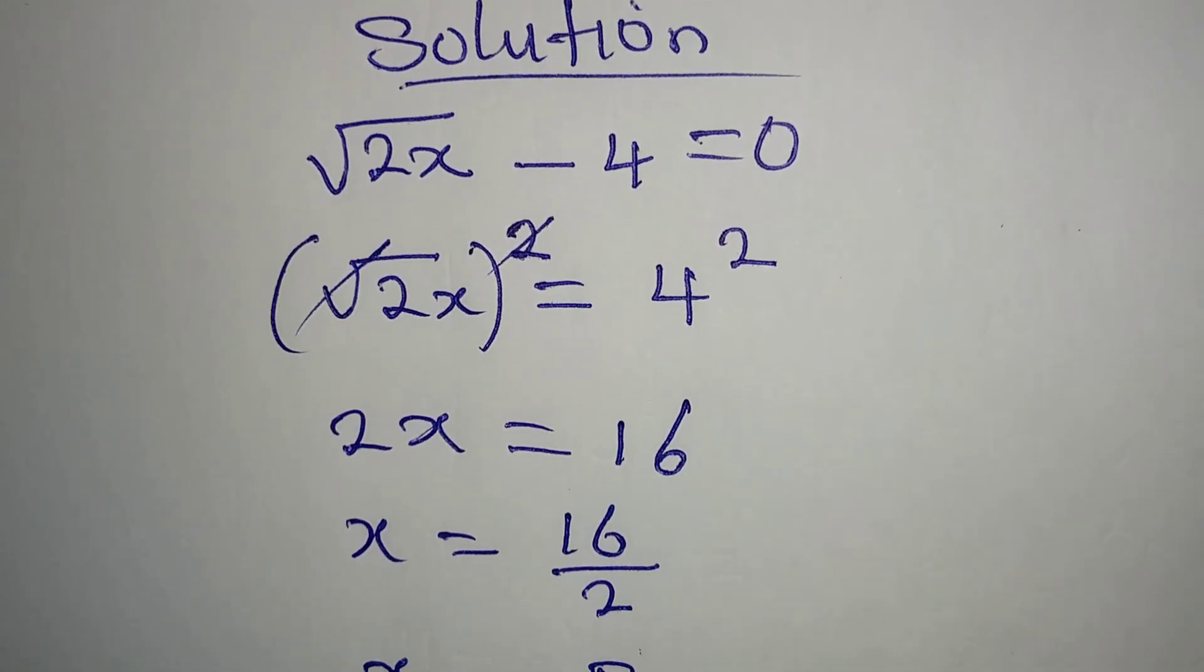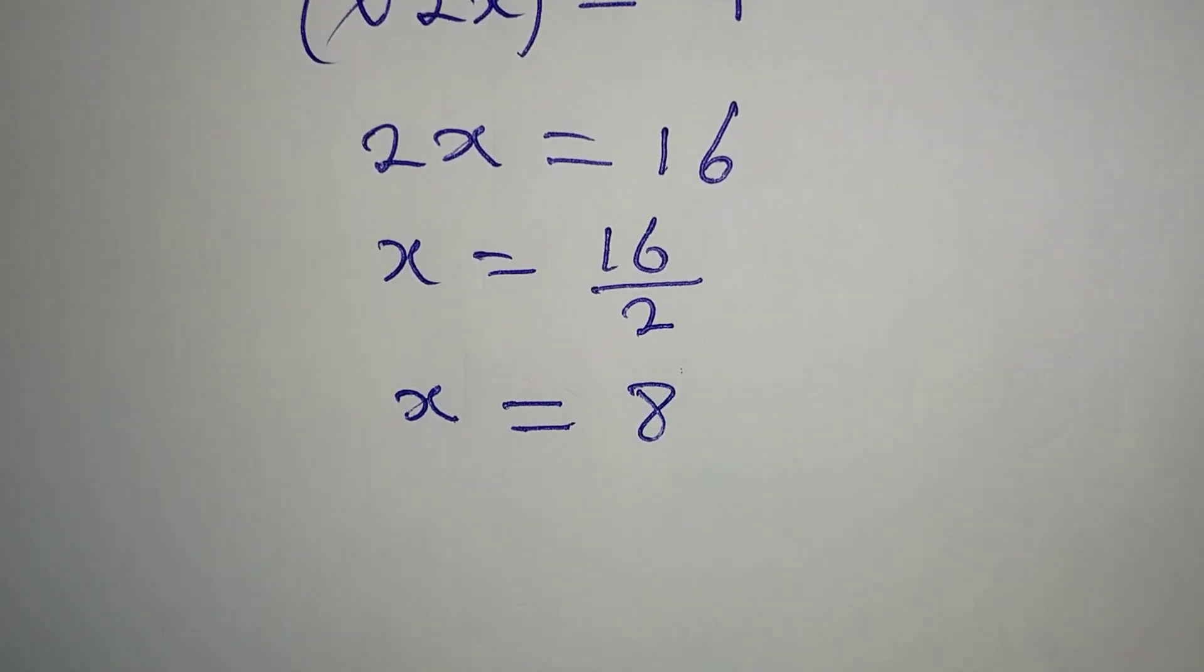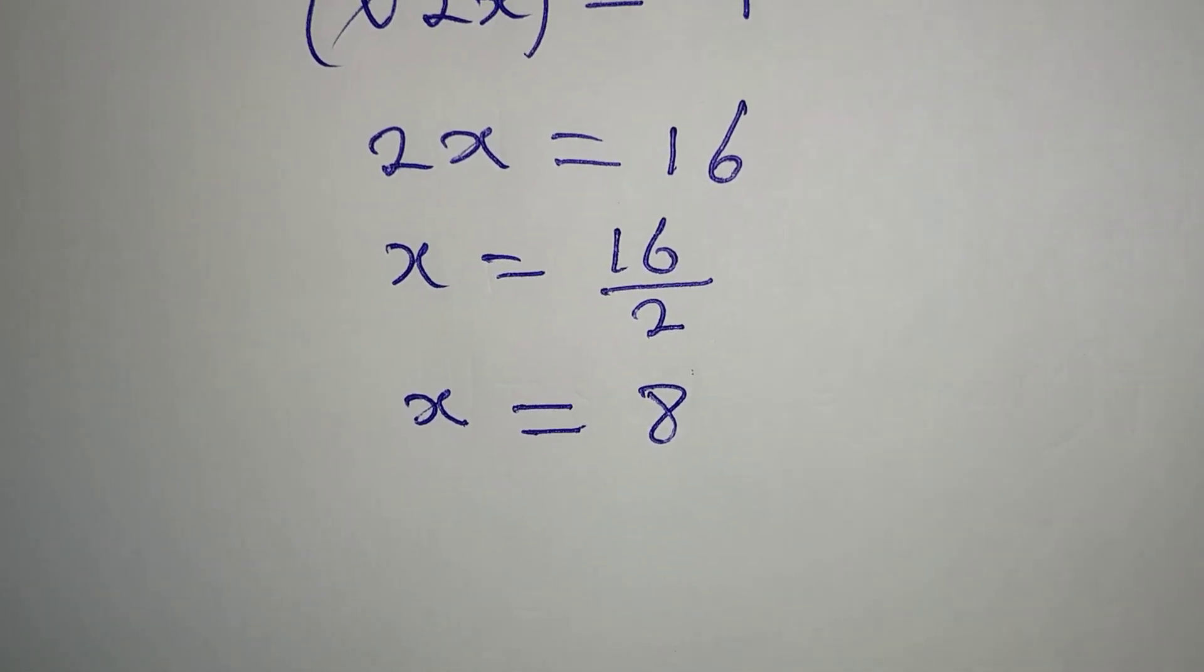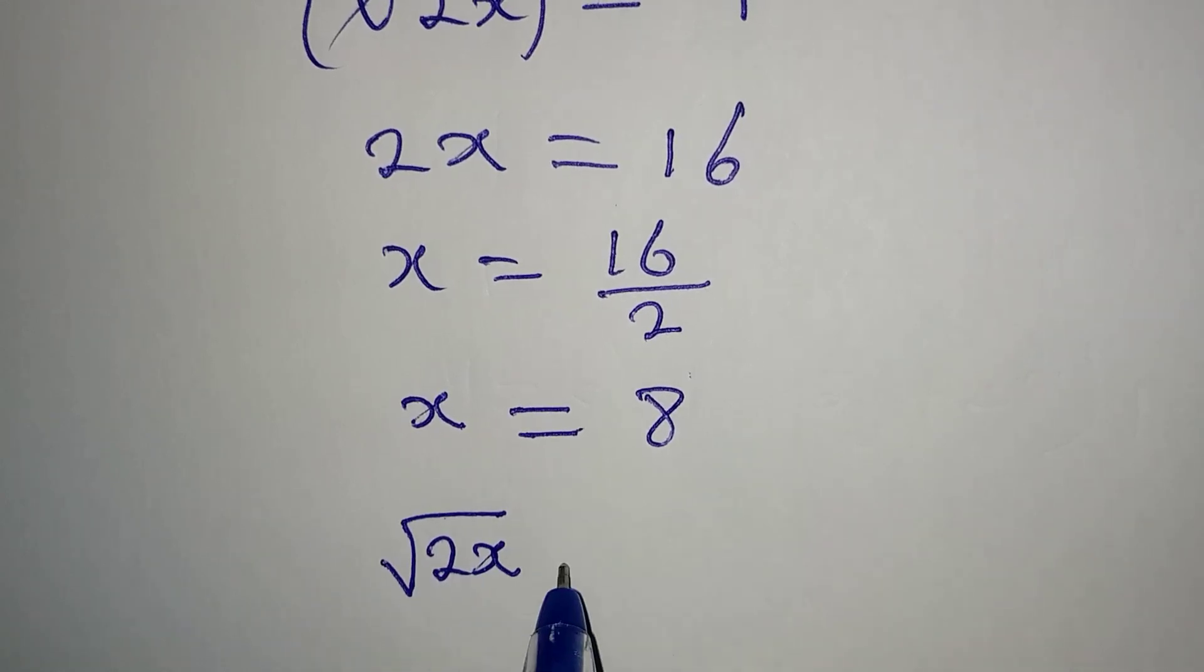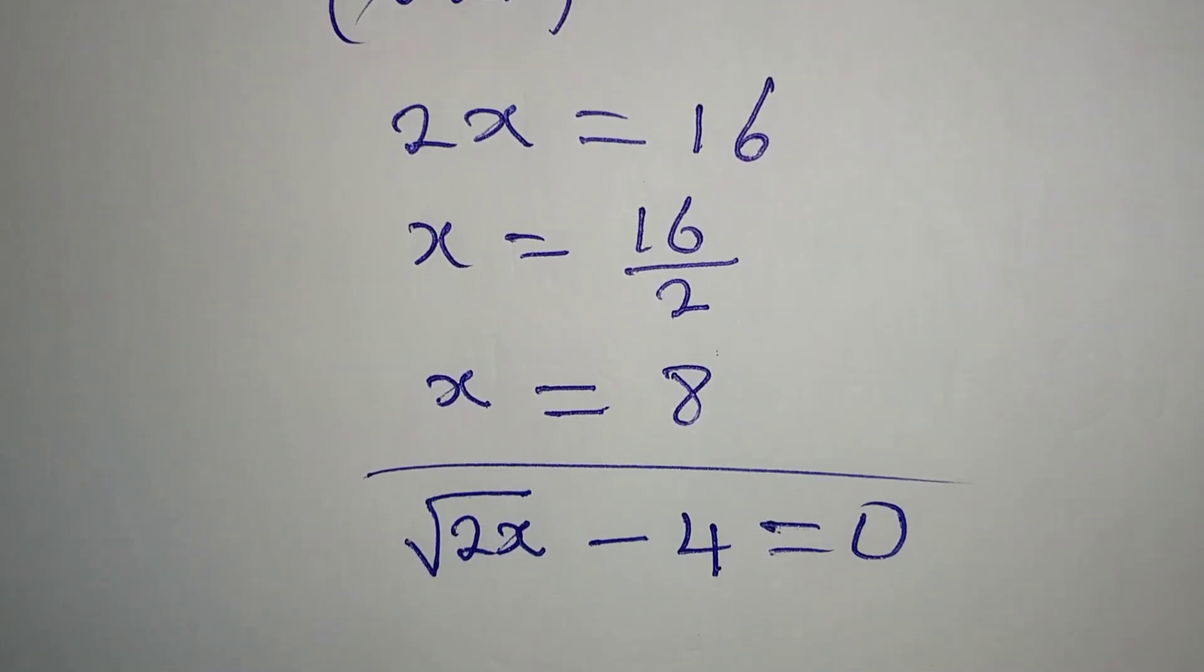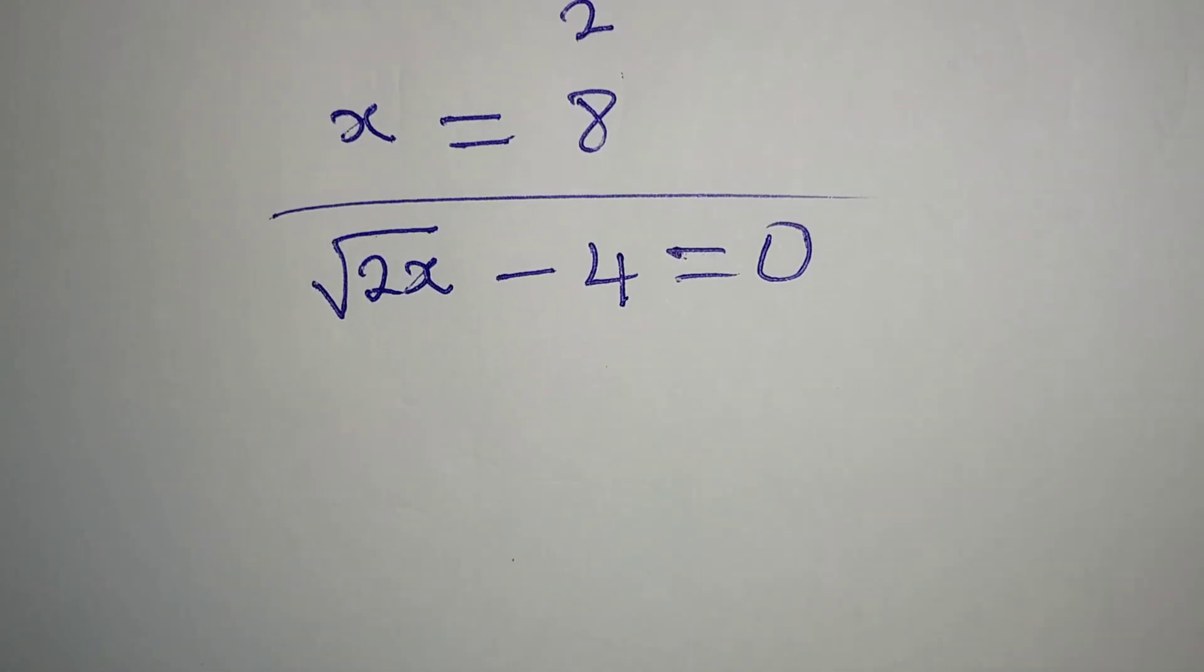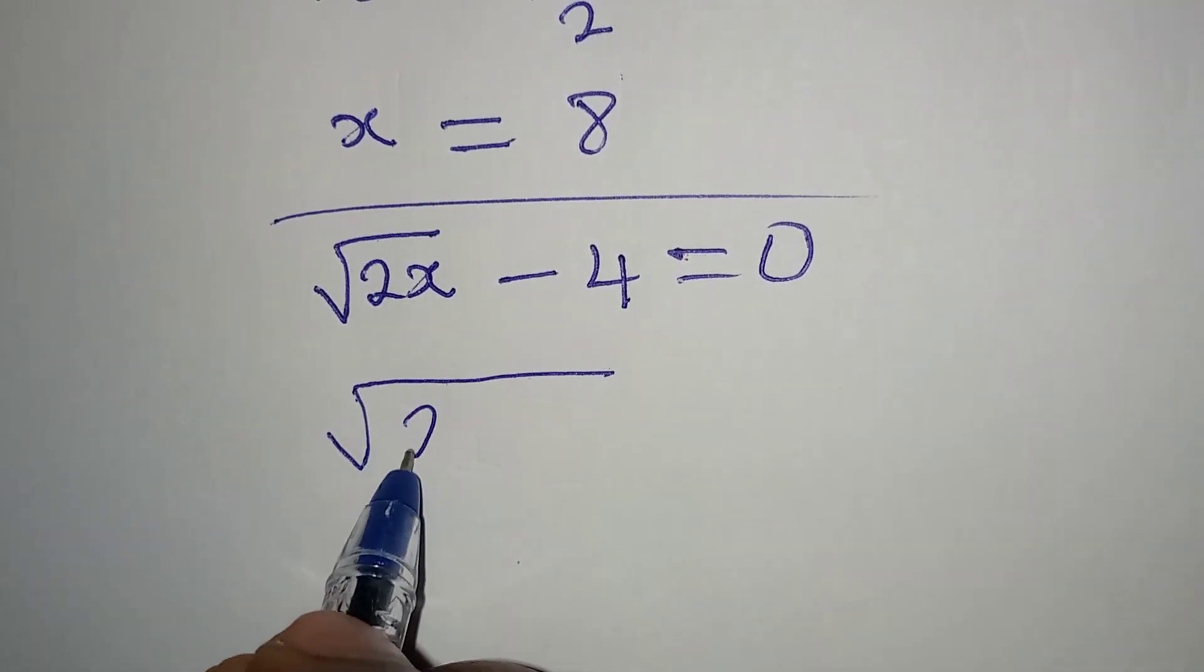Now let's go back to the original equation where we had square root of 2x minus 4 being equal to 0. We are trying to check the work, and our value for x is 8. That means we have square root of 2 times 8, then minus 4.